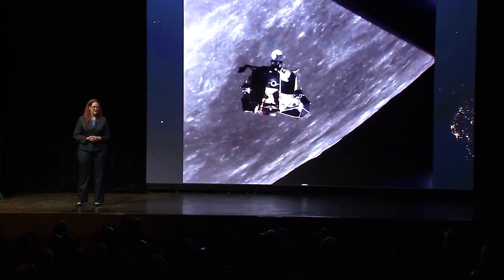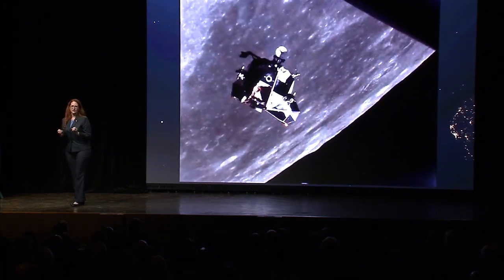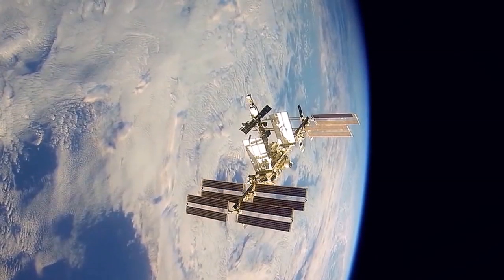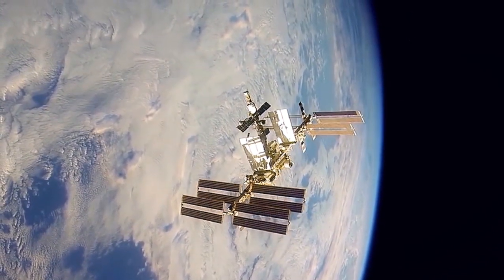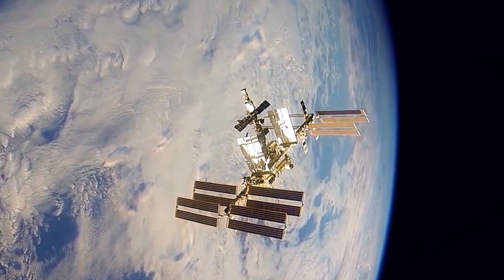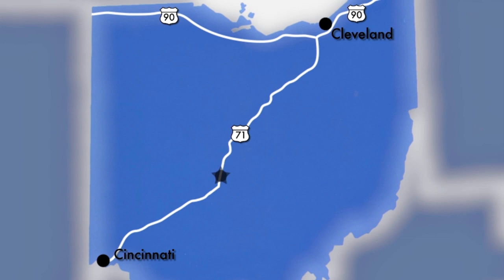And this is a significant distance. Given the diameter of the Earth, roughly 30 Earth-sized planets can fit between the Earth and the Moon. Now, since Apollo, the farthest we've sent humans is to the International Space Station, located in a low Earth orbit roughly 400 kilometers from the surface of the Earth, or about 250 miles, or approximately the distance between Cleveland and Cincinnati.